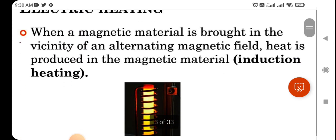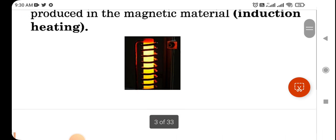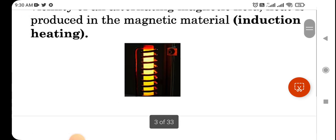There are many types of electrical heating like induction heating. When a magnetic material is brought in the vicinity of an alternating magnetic field, heat is produced in the magnetic material. This heating is known as induction heating.